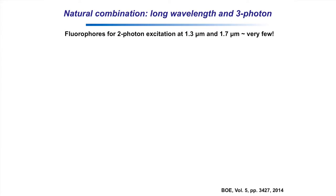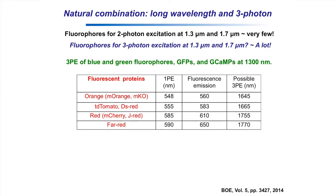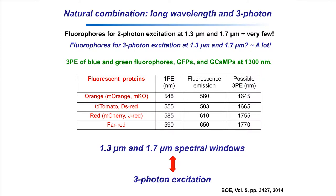These two ideas — long wavelength windows and three-photon excitation — work very synergistically. For the 1.3 and 1.7 micron windows, two-photon excitation doesn't have quite enough photon energy for most fluorophores. Adding a photon makes it work very nicely. Three-photon excitation of blue-green fluorophores like GFP works well at 1,300 nm, and three-photon excitation of orange and red fluorophores works with 1,700 nm excitation. The two ideas essentially form one combined approach for deep and fast imaging.